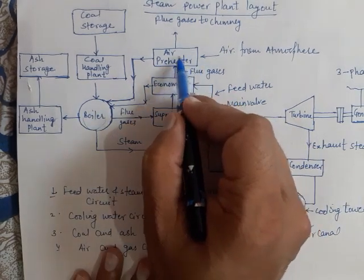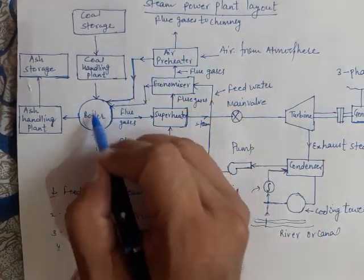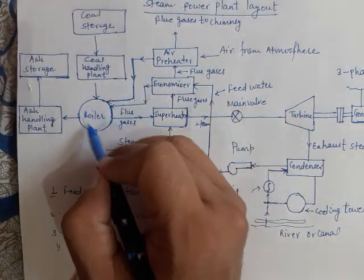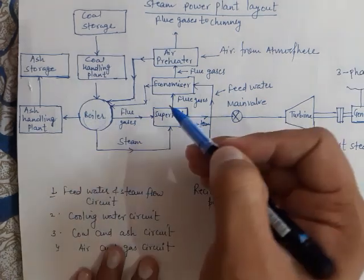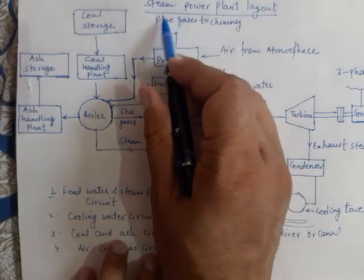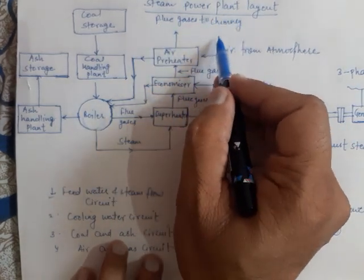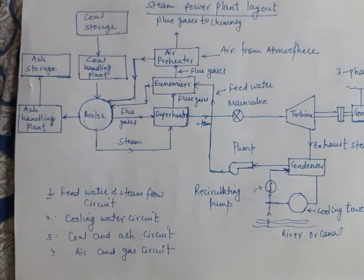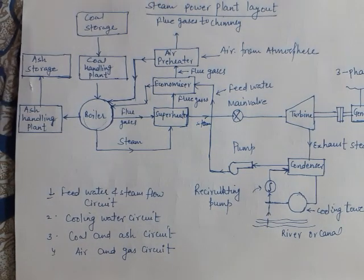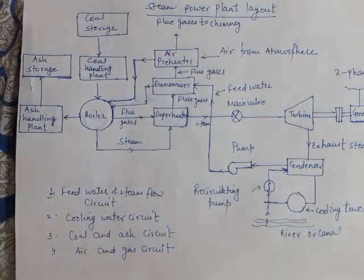After preheating, the air is supplied inside the boiler for the combustion of fuel. After the air preheater, the flue gases are discharged via a chimney to the atmosphere. This completes the flue gas circuit.